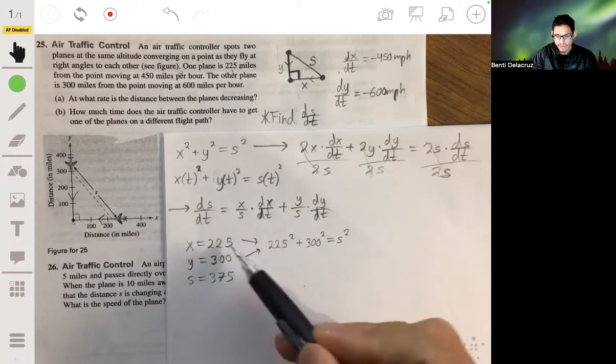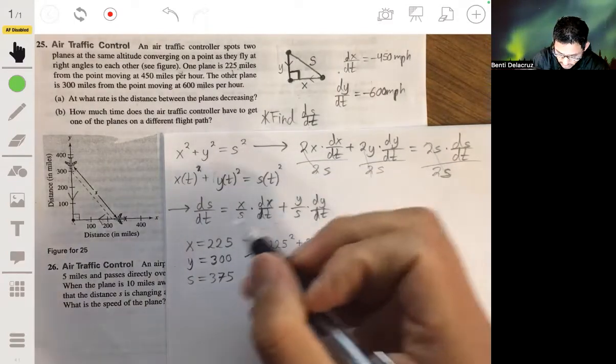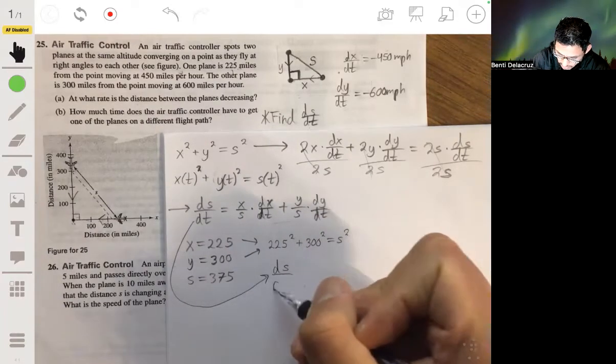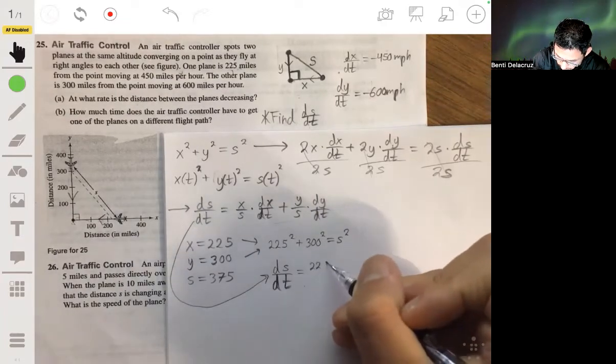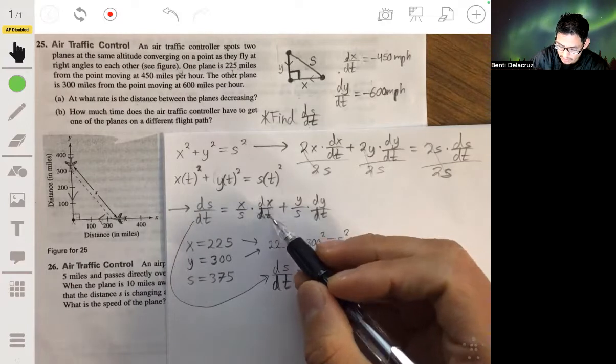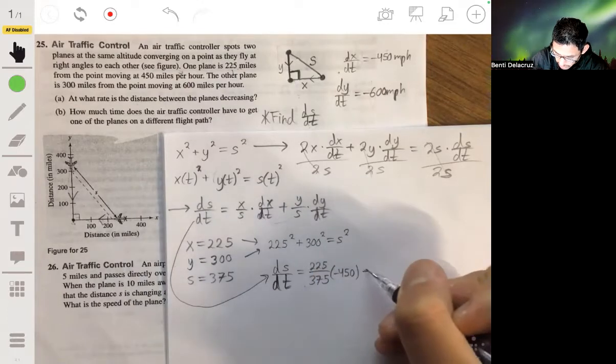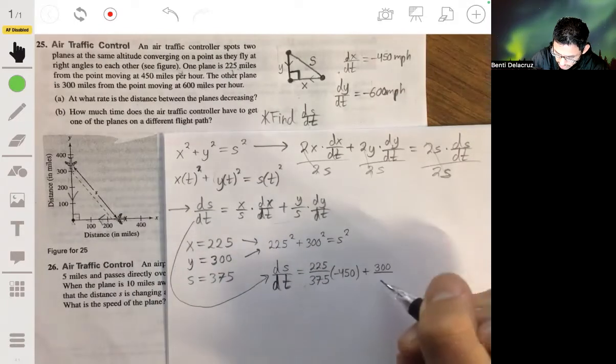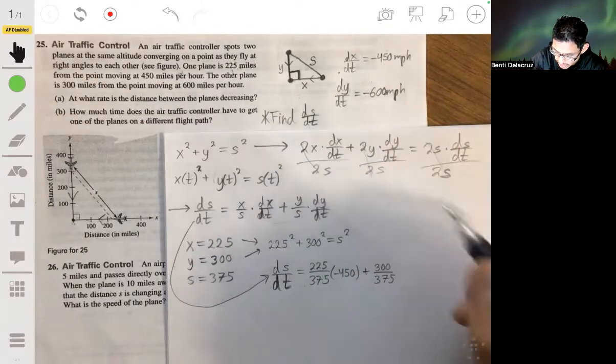Okay, so now we just plug these values in to our equation for dS over dt. So dS over dt, 225 over 375 times dx over dt, so times negative 450, plus Y, 300 over 375 times dy dt, times negative 600.